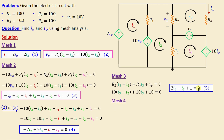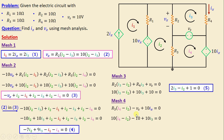Moving on to mesh 4, applying Kirchhoff's voltage law we write: R3(i4 minus i1) minus Vs plus 10ix equals 0. Replacing the resistor and voltage source with their numerical values, we obtain finally: i4 minus i2 minus 1 plus i3 equals 0.